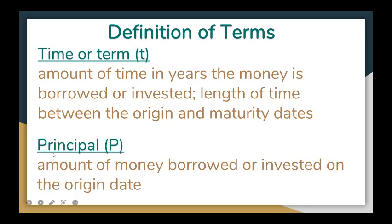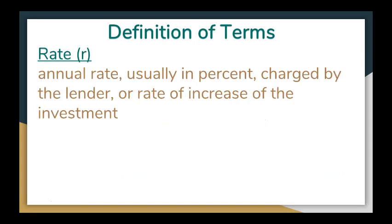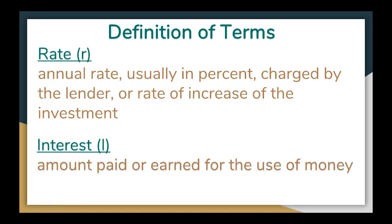The principal, denoted by capital letter P, is the amount of money borrowed or invested on the origin date. Next is the rate, denoted by small letter R — an annual rate usually in percent charged by the lender, or the rate of increase of the investment. Next is interest, denoted by capital letter I — the amount paid or earned for the use of money.